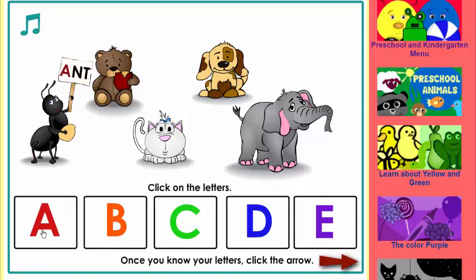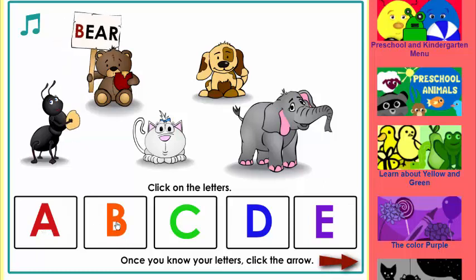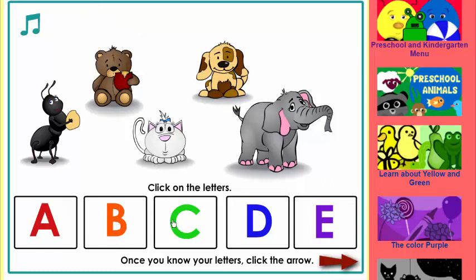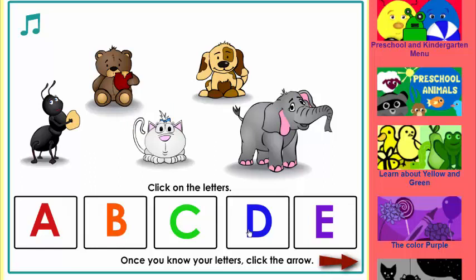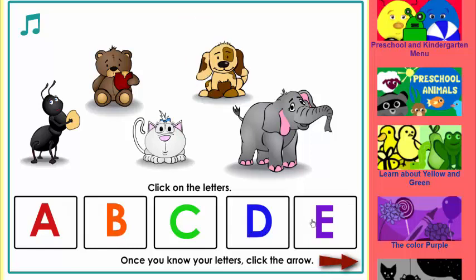A. Ant begins with A. B. Bear begins with B. C. Cat begins with C. D. Dog begins with D. E. Elephant begins with E.